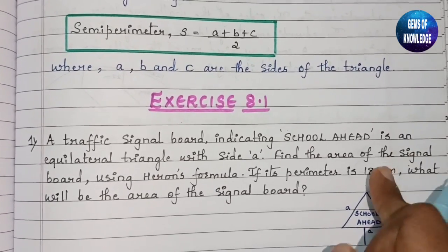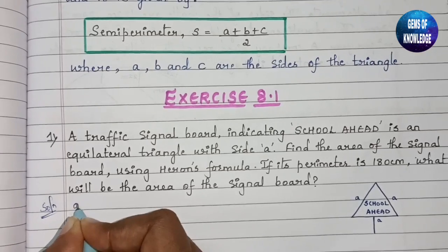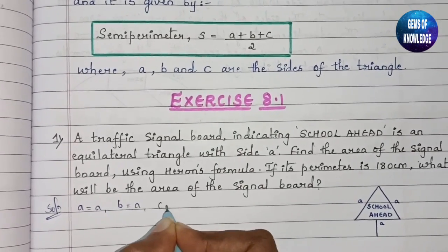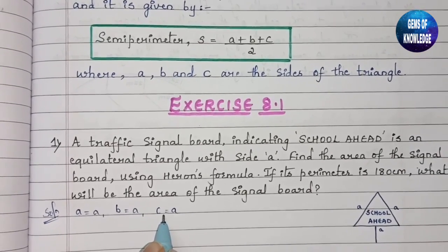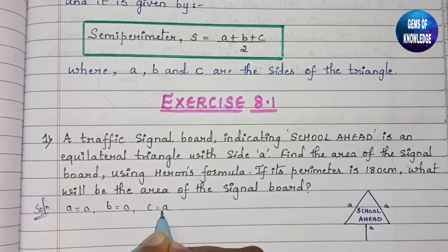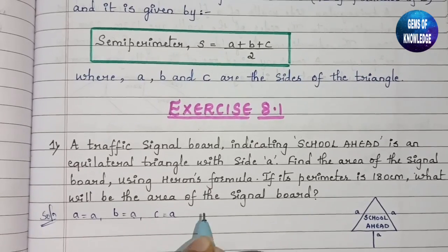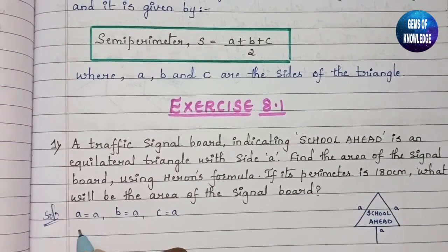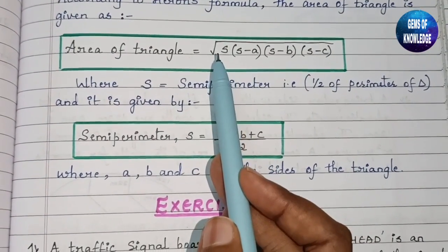Since the triangle has all sides equal to A, we assign side A = A, side B = A, and side C = A — all in centimeters. According to Heron's formula, we need S first because the formula requires S.